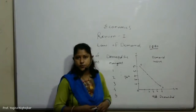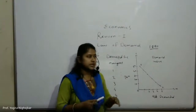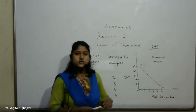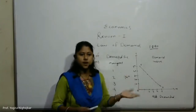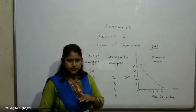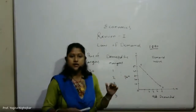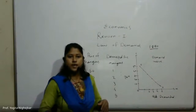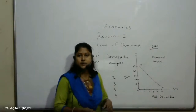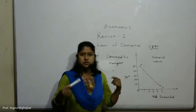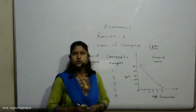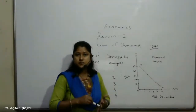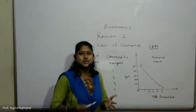Next assumption is no change in size of population. It is assumed that the size of population remains unchanged, because a change in population will bring about a change in demand even if price remains the same. When the price of a commodity falls, more buyers can afford to buy it and demand expands.